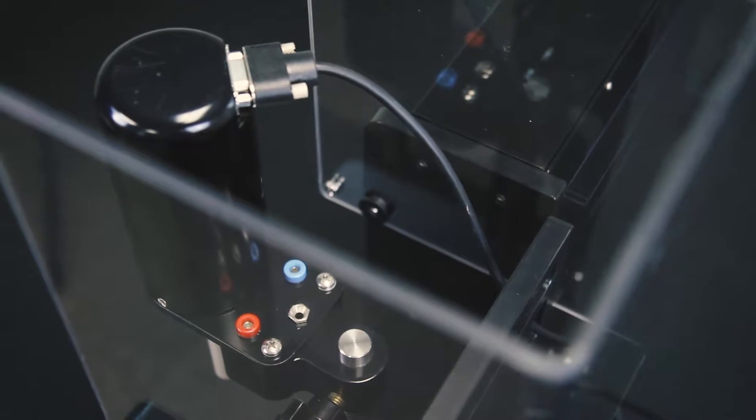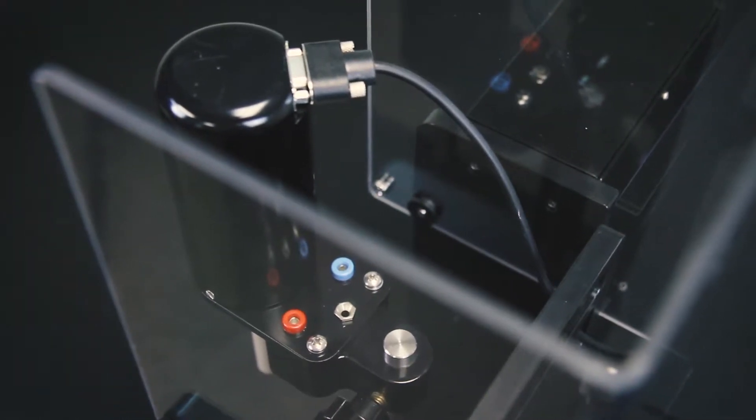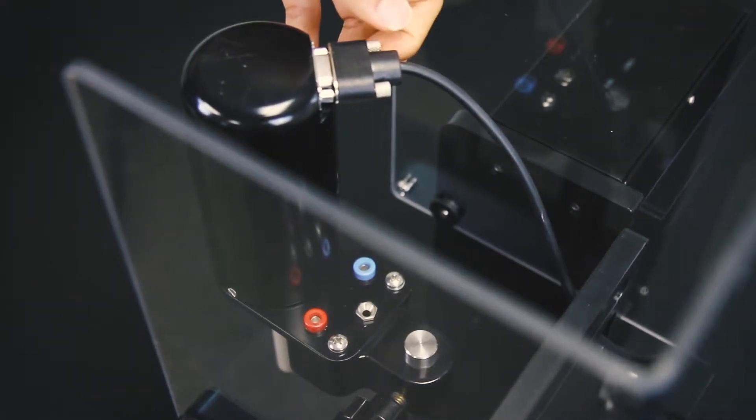Next, unplug the motor cable by loosening the two thumb screws and pull the cable out of the motor unit.